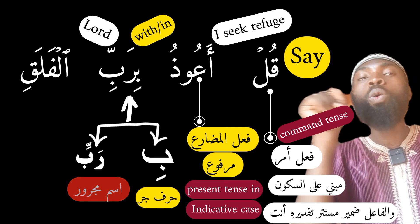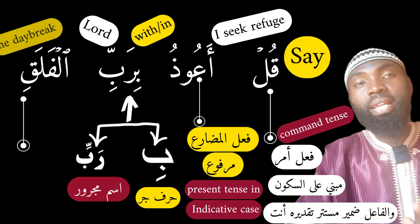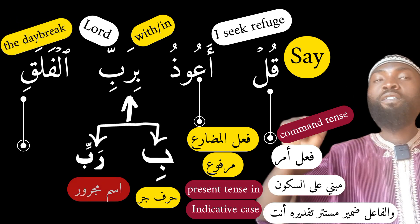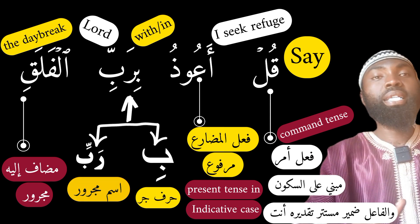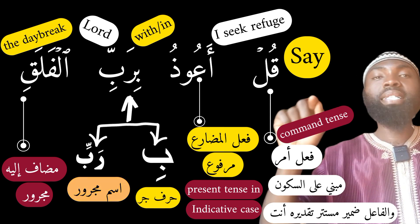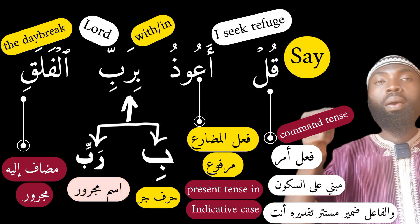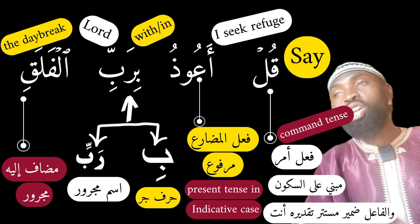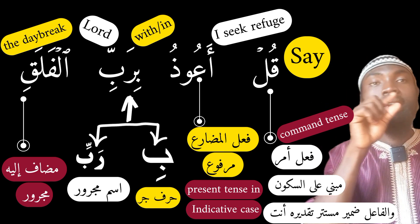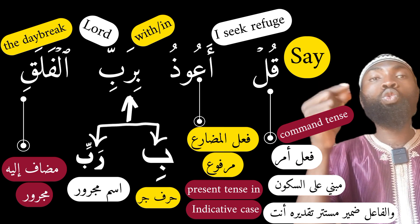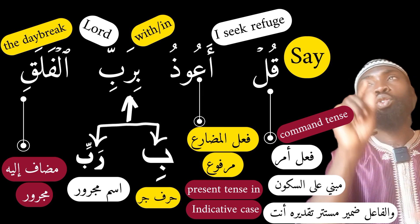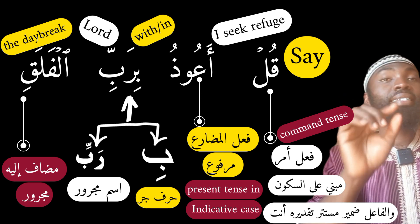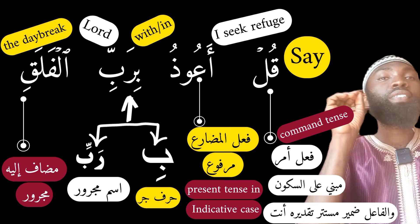The last word is 'al-Falaq,' which means 'the daybreak.' So 'Rabbi l-Falaq' means 'Lord of the daybreak.' Grammatically, 'al-Falaq' is coming as the mudaf ilayhi — the possessor. The mudaf ilayhi will always carry kasra: ismun majrur wa alamatu jarrihi al-kasratu al-zahira. So: 'Qul A'udhu bi-Rabbi l-Falaq' — 'Say, I seek refuge with the Lord of the daybreak.'